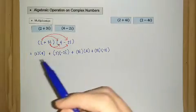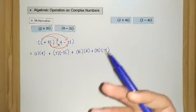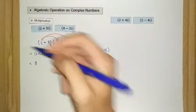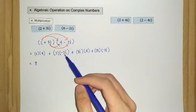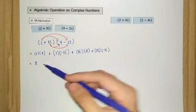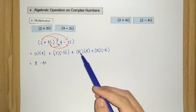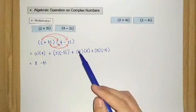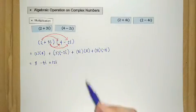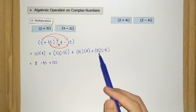The next step is to simplify all the terms, combining like terms. So 2 times 4 is 8. Then 2 times negative 2i gives us negative 4i. Next, 3i times 4 gives us 12i. And finally, 3i times negative 2i gives us negative 6i squared.